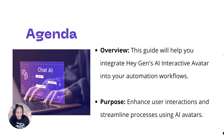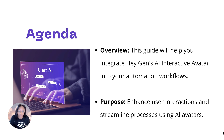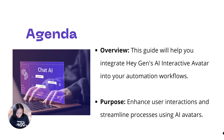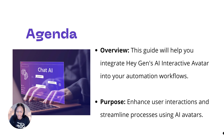So a quick overview. This guide will help you integrate HeyGen's AI interactive avatar into your automation workflows right away. As soon as you're done with this presentation you'll have everything you need to start implementing this into your Make and Zapier integrations, even custom AI automations as well. The purpose is to enhance user interactions and streamline processes using AI avatars — this is going to completely change the game for AI automations agencies, because you'll be able to upsell your clients on a more quality user interaction.